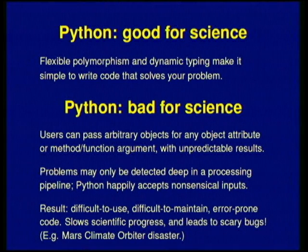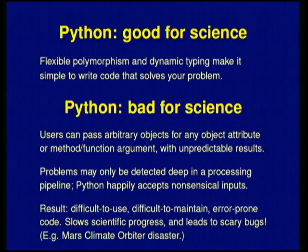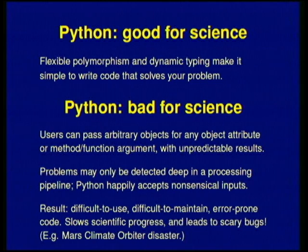It's certainly true that flexible polymorphism and dynamic typing make it simple to write code that solves your problem, whatever your problem might be that day. However, I would also argue that Python is bad for science, for exactly the same reason. If you write some piece of code and give it to a student or collaborator, they can pass whatever they want into your code, and you have no idea what's going to happen.